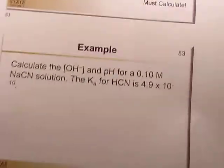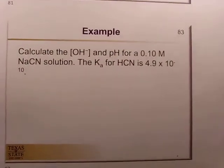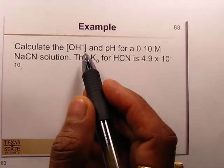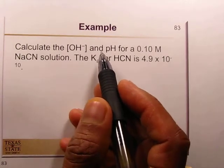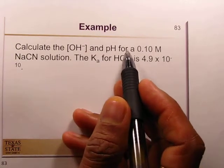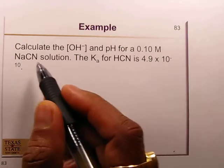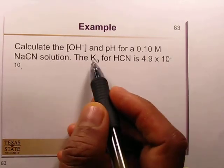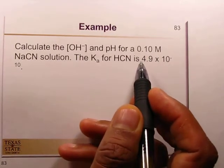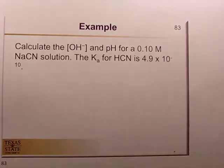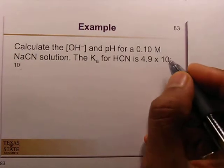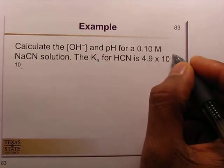Let's see one example to understand how we can solve this type of question. Calculate the hydroxyl ion concentration and the pH of a 0.1 molar sodium cyanide solution. The Ka for HCN is 4.9 times 10 to the power of minus 10.